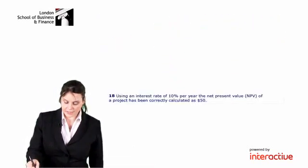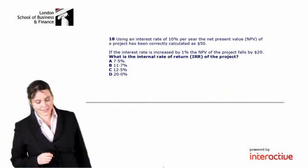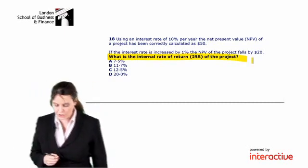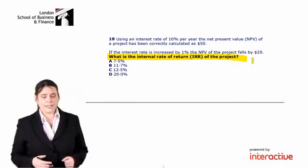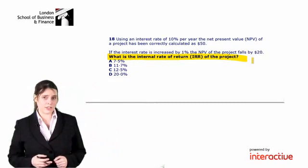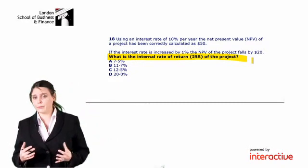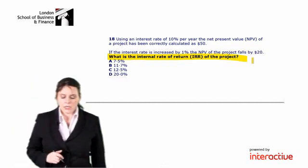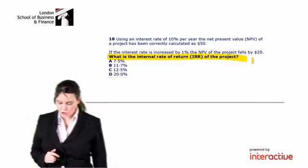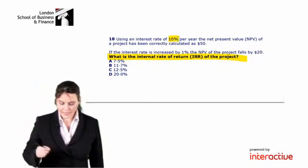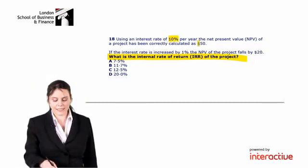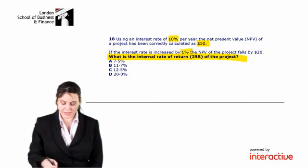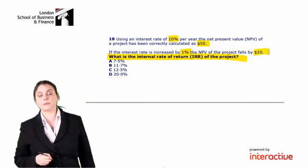Having a look at our first exam question, we are asked to calculate what is the internal rate of return of the project. Immediately I know that the most difficult part of this question is probably going to be remembering how I calculate my internal rate of return, so the formula. We're told using an interest rate of 10% per year, the net present value of a project has been correctly calculated as $50. If the interest rate is increased by 1%, the NPV of the project falls by $20.